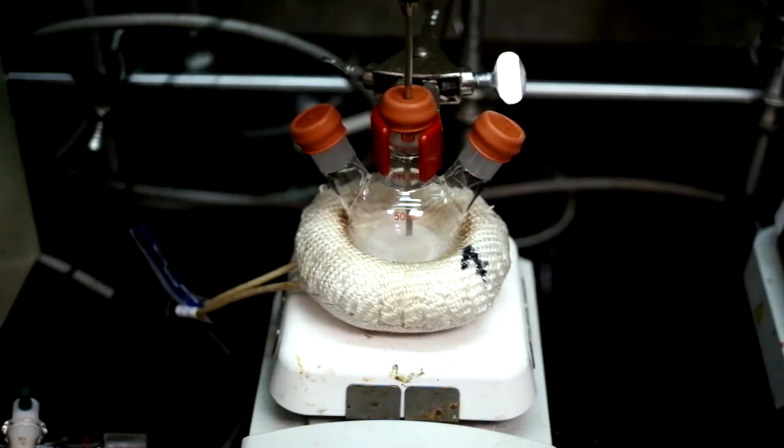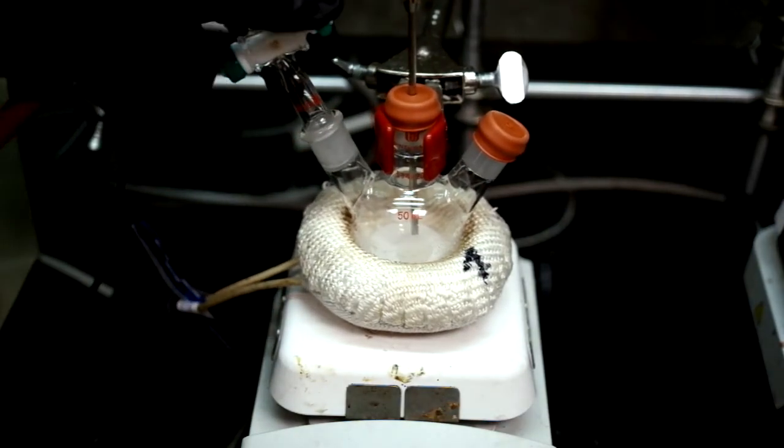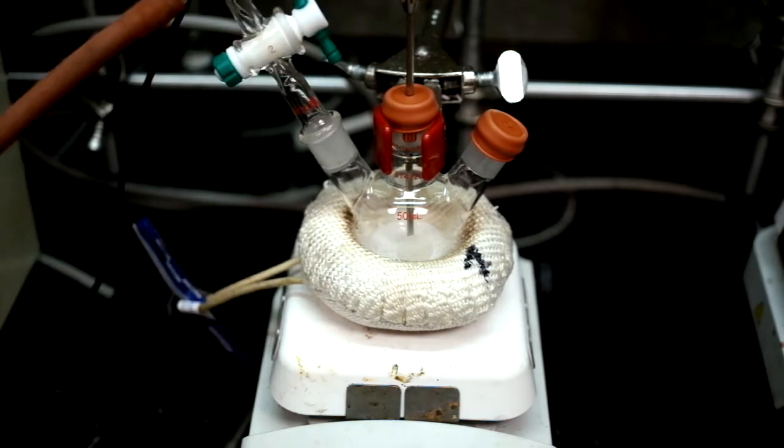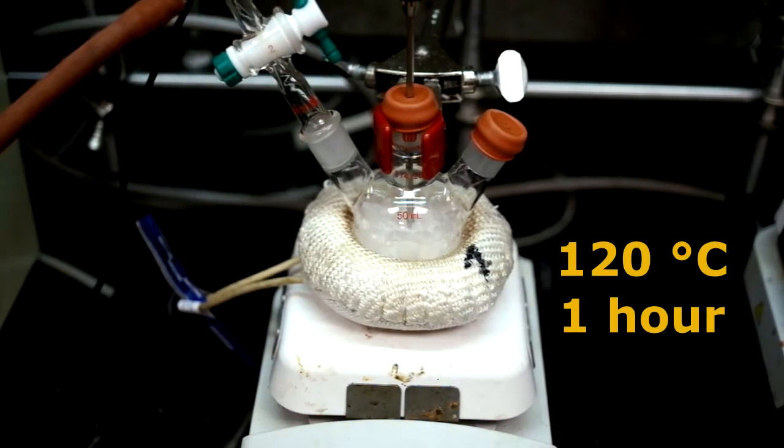For each of the three flasks, we insert a temperature probe, turn on the magnetic stir bar, and place under vacuum for one hour at 120 degrees Celsius.